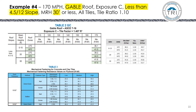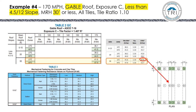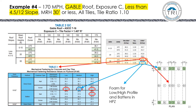For example four, we switch to a gable roof at less than 4.5:12 slope, keeping the mean roof height at 30 feet. We go to Table 2GC (GC = gable, Exposure C), get our uplift moments, and factor in the tile ratio. In the LPZ, for low or flat profile tile there is only one mechanical fastening method; similar single options exist for medium and high profile. In the HPZ, only medium profile has a mechanical fastening option — low and high profiles, plus battens, will have to use foam for the high-pressure zones.